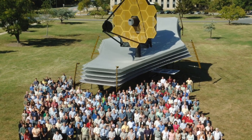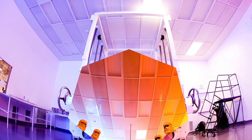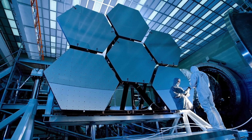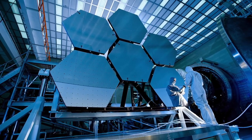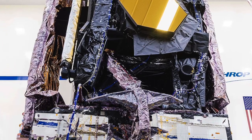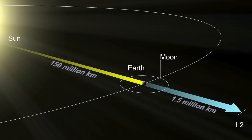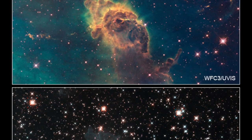The James Webb Space Telescope, the largest space telescope ever built, is designed for infrared astronomy, surpassing the capabilities of the Hubble Space Telescope. With high-resolution and high-sensitivity instruments, it can observe ancient, distant, and faint objects, opening up new avenues in astronomy and cosmology.